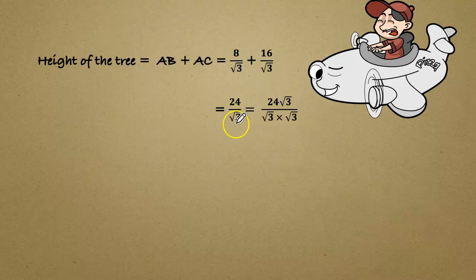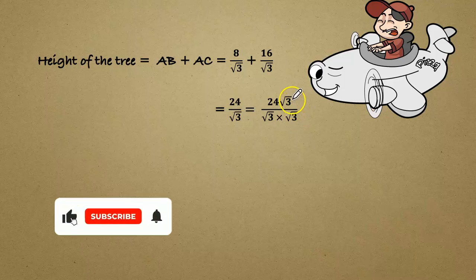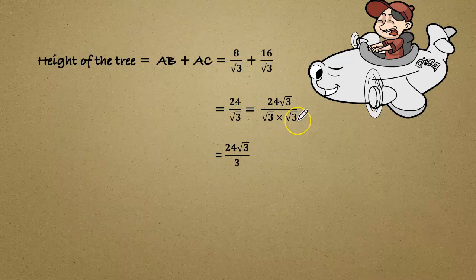We have to rationalize the denominator by multiplying root 3, numerator and denominator. So we get 24 root 3 divided by 3. 3 and 24 we can cancel it by 8.